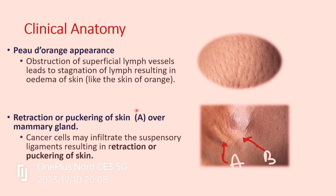The second clinical sign is retraction or puckering of the skin — the skin is pulled back. This happens because cancer cells infiltrate the suspensory ligaments which support the breast. These ligaments shorten and pull the skin towards the deeper aspect, since one end of the suspensory ligament is attached to the pectoral fascia.